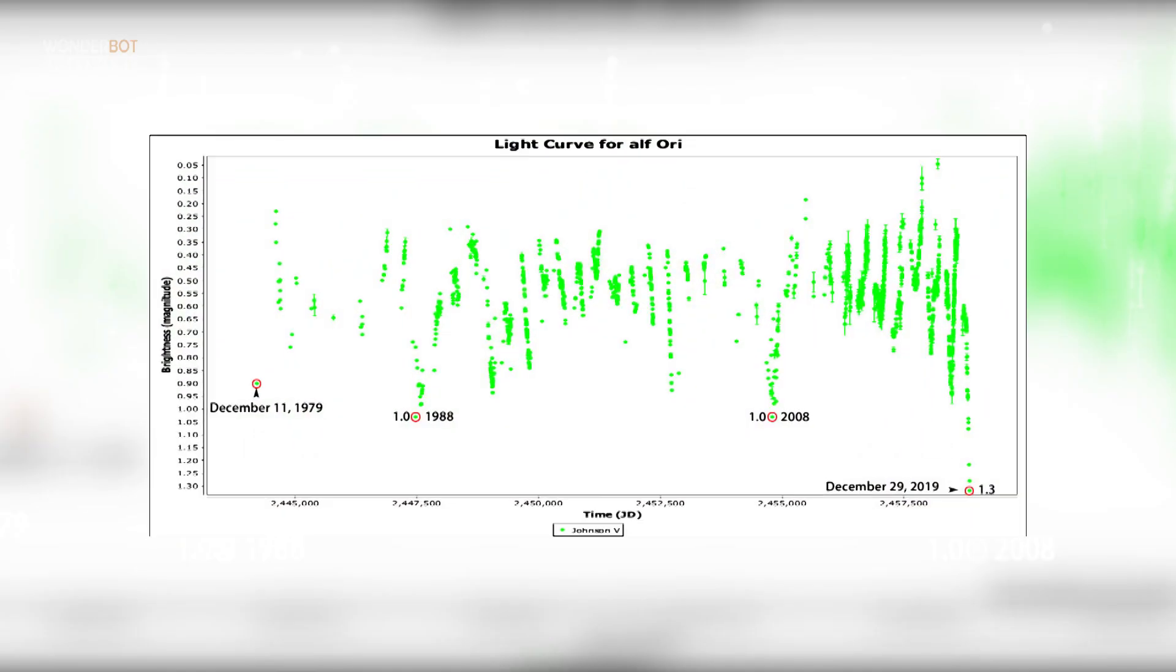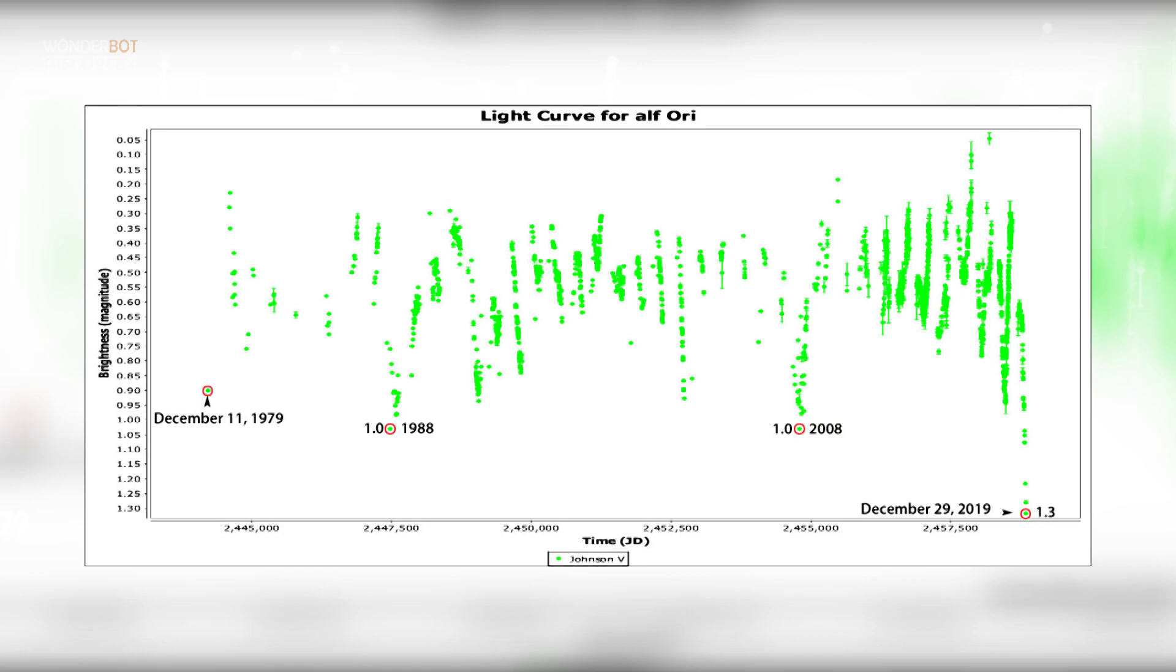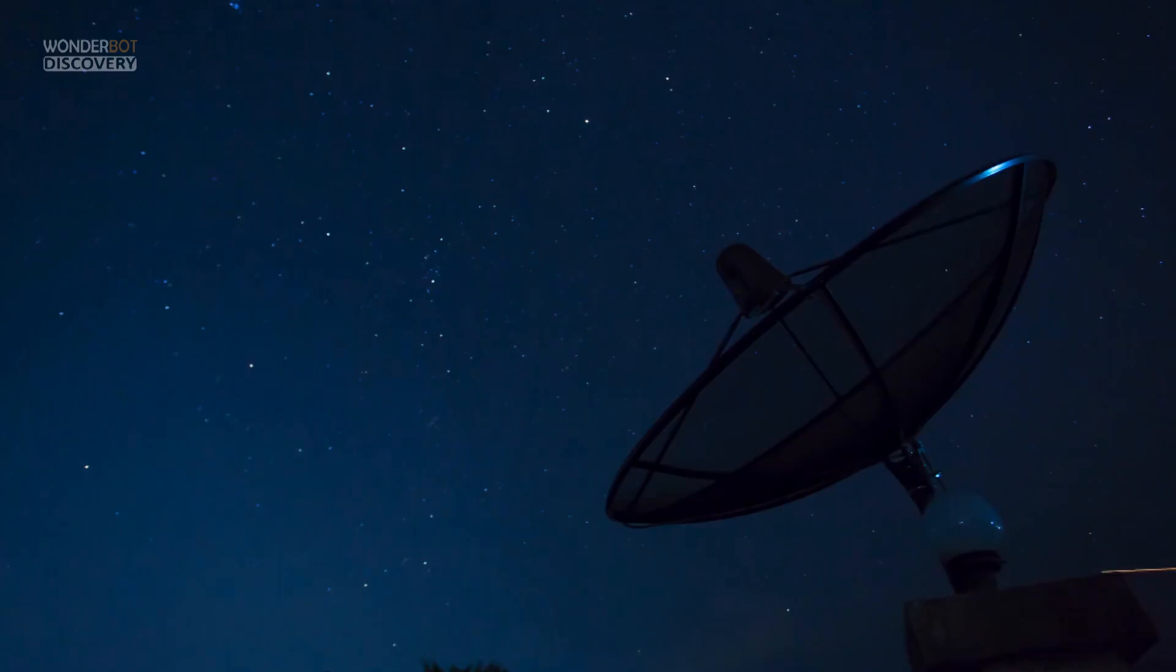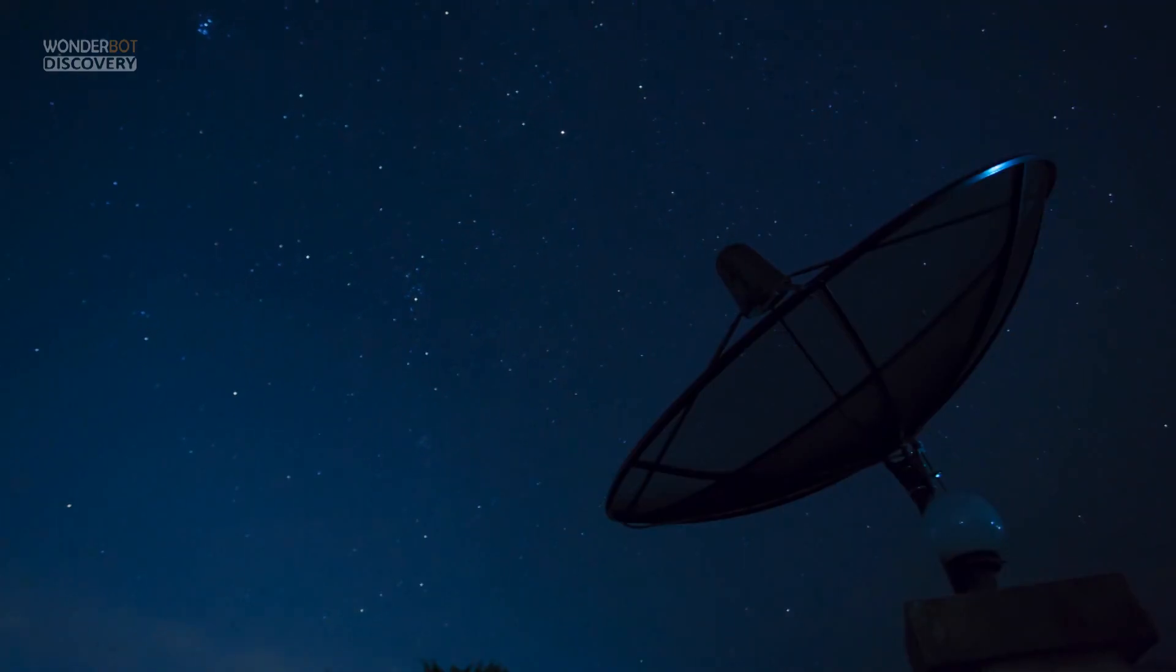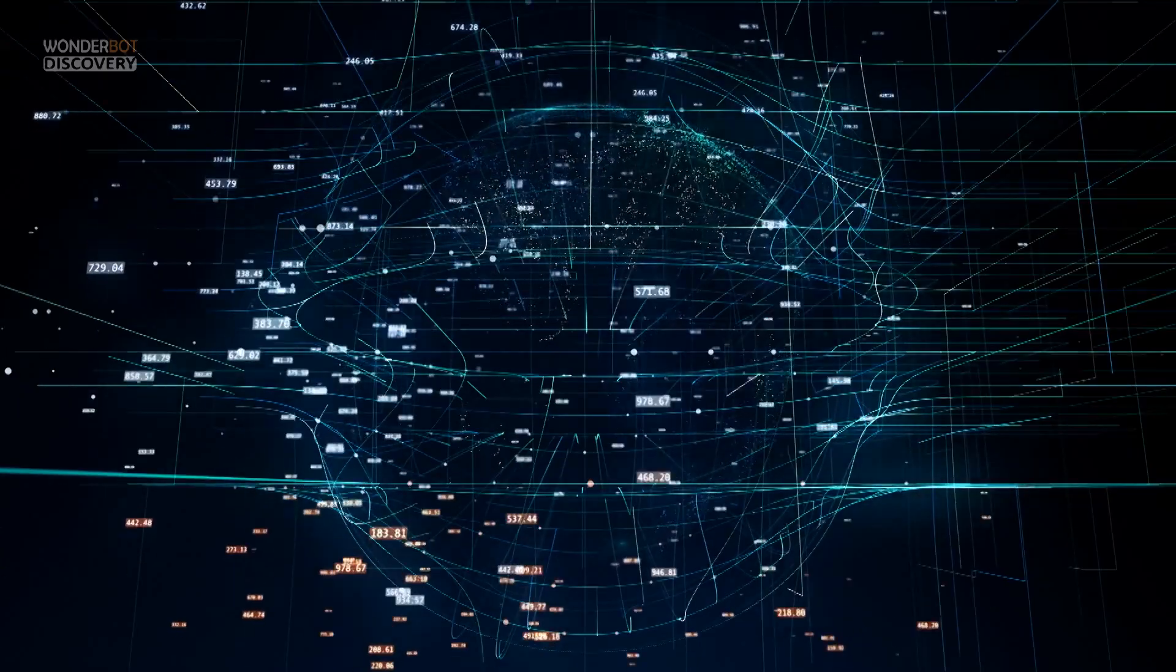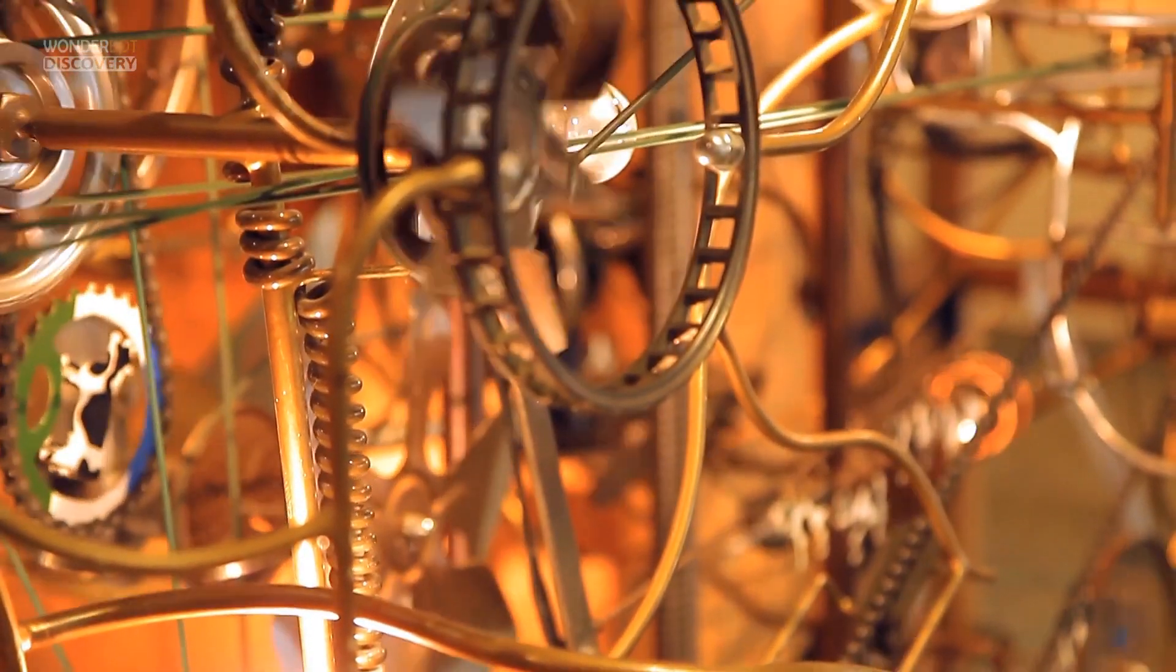So what's responsible for the recent dimming? Betelgeuse's usual 420-day pulsation cycle, which is caused by variations in the star's size, cannot alone account for the dimming, says Levesque. So there's probably at least one other mechanism going on.